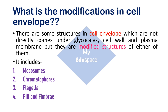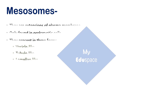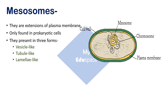The first one is mesosomes. These are extensions of the plasma membrane. In this picture you can see the green outer covering — this is the cell wall — and inside it the plasma membrane in yellow color, which extends inside the cytoplasm, thereby increasing the surface area of the plasma membrane. Inside the cytoplasm they are present in three forms: vesicle-like, tubule-like, and lamella-like.